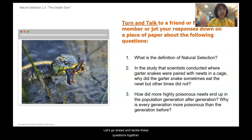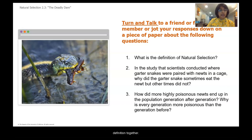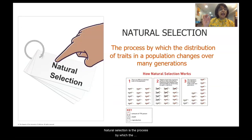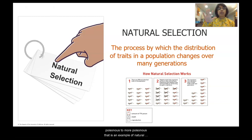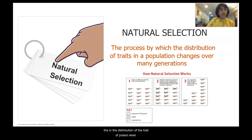Let's tackle these questions together. Number one: what is the definition of natural selection? Natural selection is the process by which the distribution of traits in a population changes over many generations. In our context, we're talking about poison level. The change in our newt population from becoming less poisonous to more poisonous is an example of natural selection — a change in the distribution of the trait of poison level.